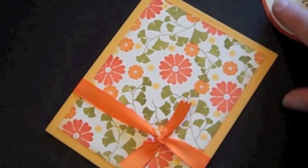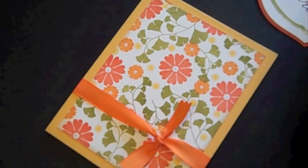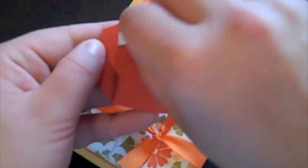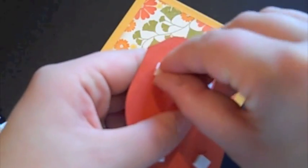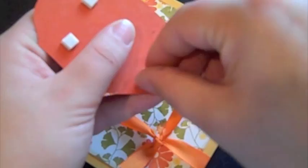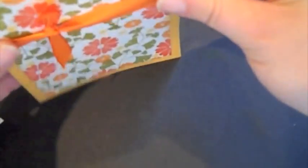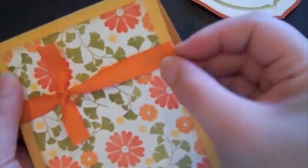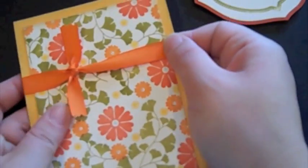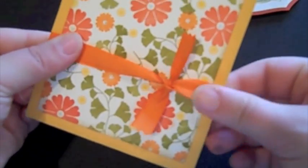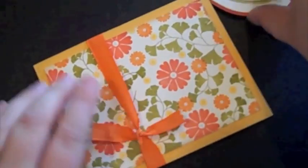Okay, and now that I've got that, I'm just going to take some foam dimensionals here. And I'm going to adhere the sentiment block that I created earlier with a little bit of dimension over the ribbon. It's just a nice touch with the sentiment block. I'm actually going to move this ribbon over just a tad. And that's why I like tying the ribbon directly around the card base like this, because it gives me a little bit of freedom to move it if I'd like. I'm actually going to slide this down a little bit too.